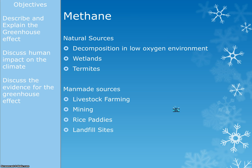Our next greenhouse gas is methane. Natural sources of methane occur whenever something is decomposing in a low oxygen environment — if there's not much oxygen present and something has died, we tend to get methane rather than carbon dioxide. This happens a lot in wetlands, which can be quite a large source of methane, and also in termite mounds — termites give out an awful lot of methane, so where you find termite mounds you find large concentrations of methane.